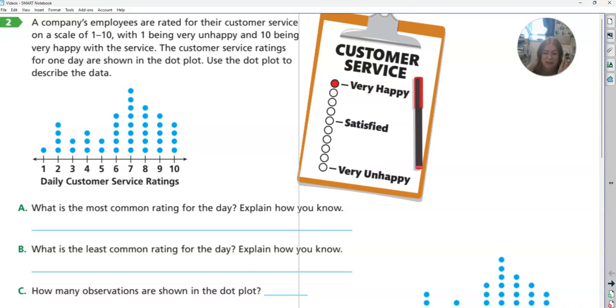Before we do anything, we need to understand what does a dot represent, and what are the numbers at the bottom representing. A dot is a person that gave a rating, and the number stands for the rating. If it's asking how many people did this, we need to look at the dots. If it's asking about the ratings, we need to be looking at the numbers.